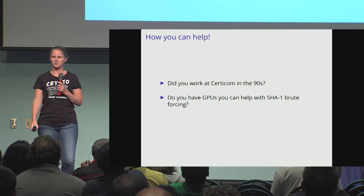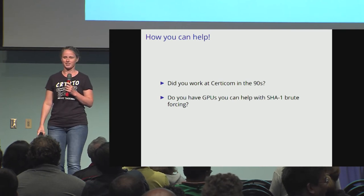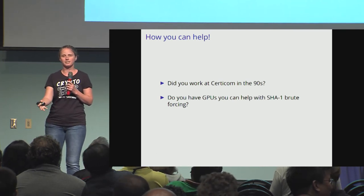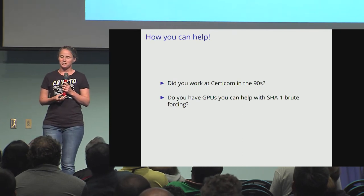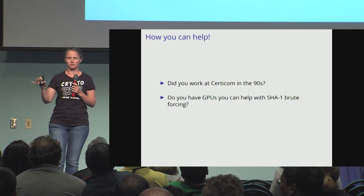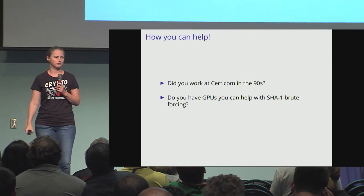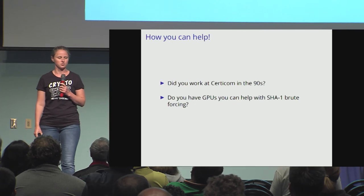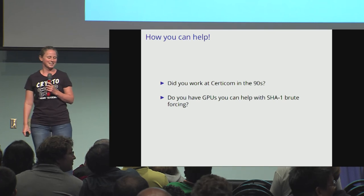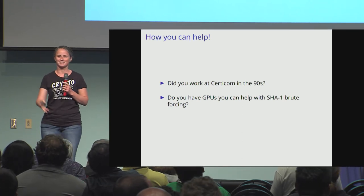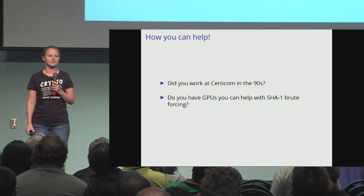If you would like to contribute to our understanding of this problem: did you work at Certicom in the 90s? It would be great to chat with you. We have talked to Dan Brown, and he did not know that this had this property. Otherwise, do you have any GPUs and can you help with SHA-1 brute forcing? There are 256 possible values if we assume the most significant 4 bits have possibly been changed. I've been running John the Ripper, but I don't really have GPUs and my cluster is down, so I don't have many CPUs either. We might hypothesize there's some ASCII seed, but we don't know what it is. Thank you.